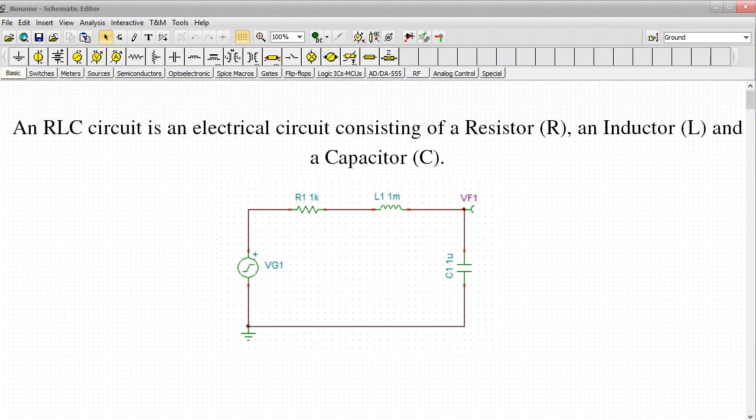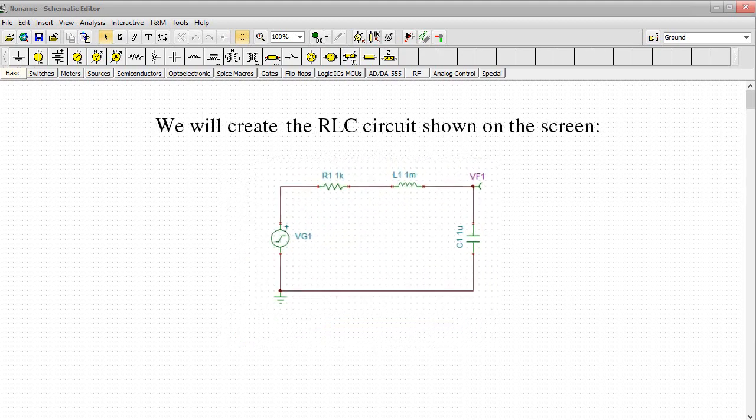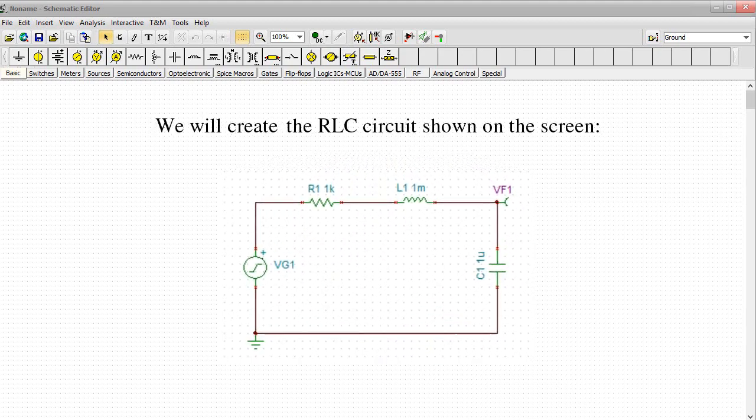An RLC circuit is an electrical circuit consisting of a resistor R, an inductor L, and a capacitor C. We will create the RLC circuit shown on the screen.